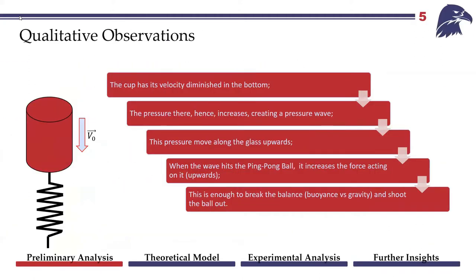In the preliminary analysis: a cup falls down and when it hits the ground — we consider it colliding with some material and model the collision properly — the velocity of the bottom is diminished, the pressure increases, creating a pressure wave that goes along the glass upwards, hits the ping-pong ball, and increases the upward force acting on it. Before, the buoyancy force was matching the gravitational force and the ball just stayed there, but then enough force breaks that balance and shoots the ball out.